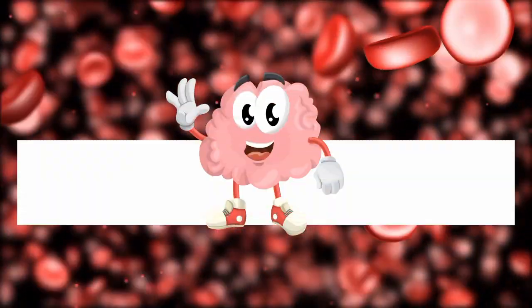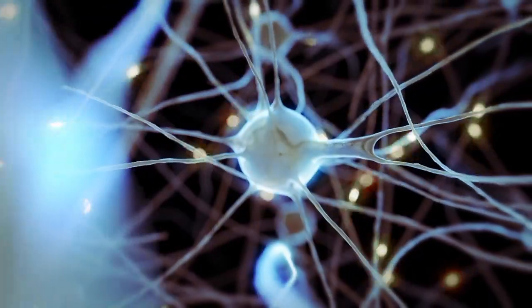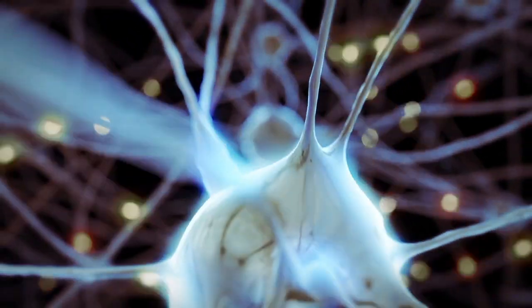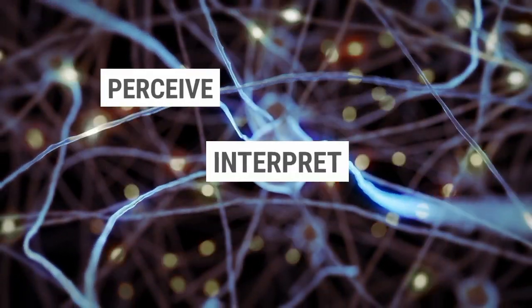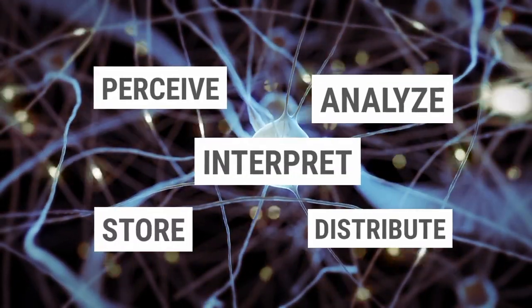Thus, the brain is both hardware and software. The same areas connected by billions of neurons and perhaps trillions of glial cells can simultaneously perceive, interpret, store, analyze, and distribute.